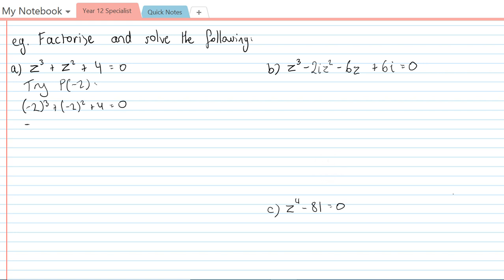Well that gives -8 + 4 + 4, which does indeed equal zero. So because the negative two worked, we know that z + 2 is a factor.